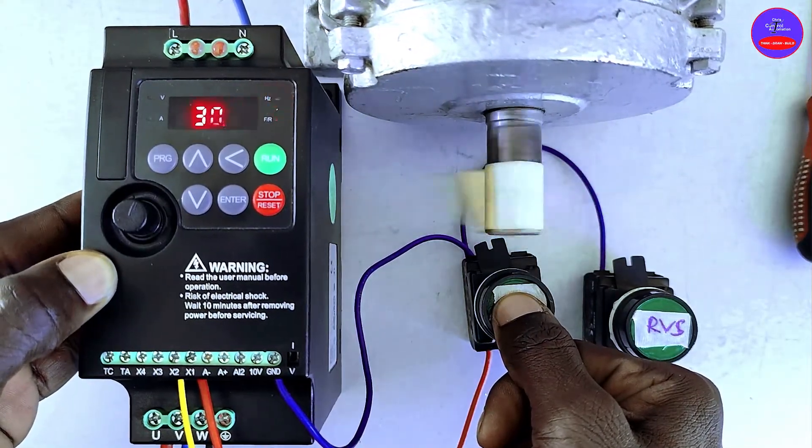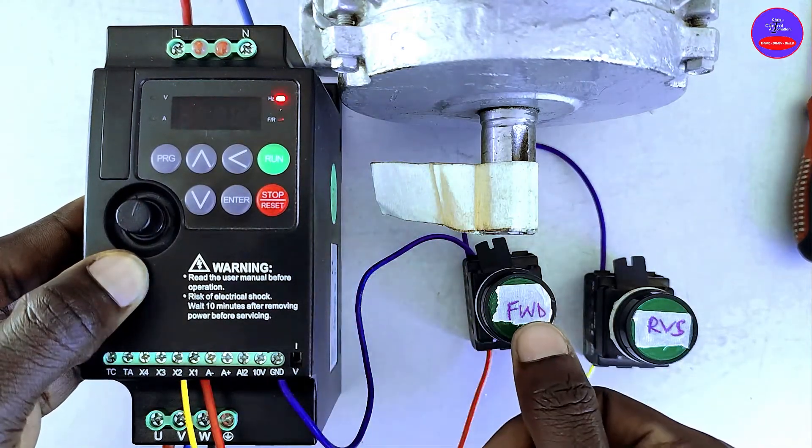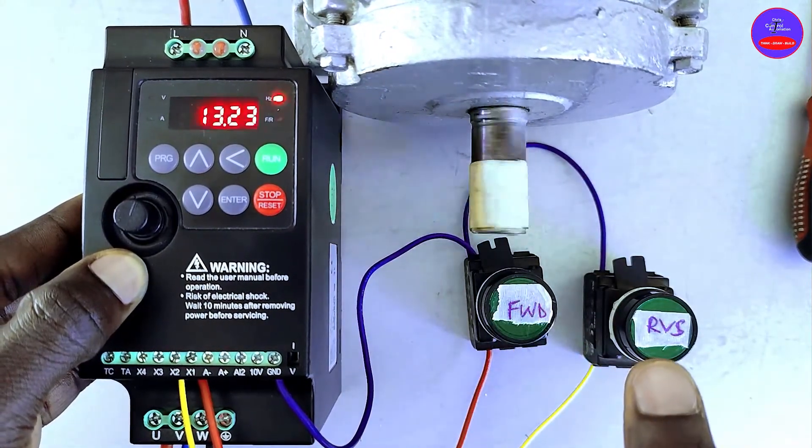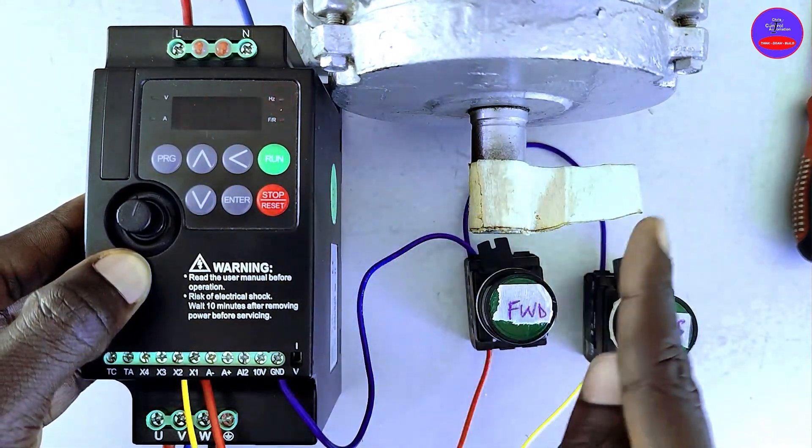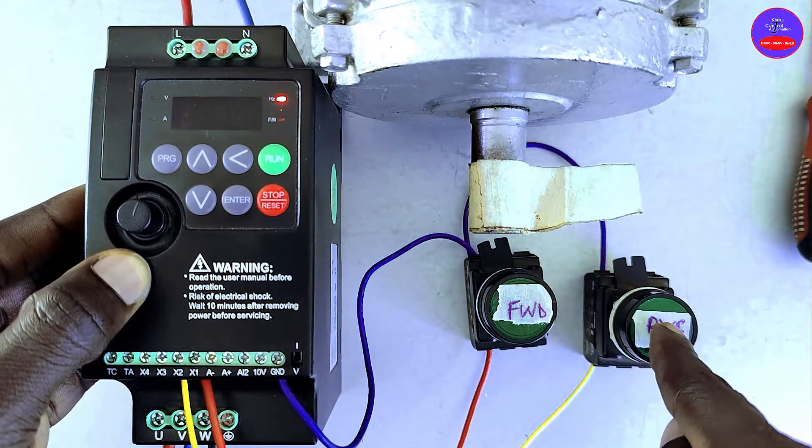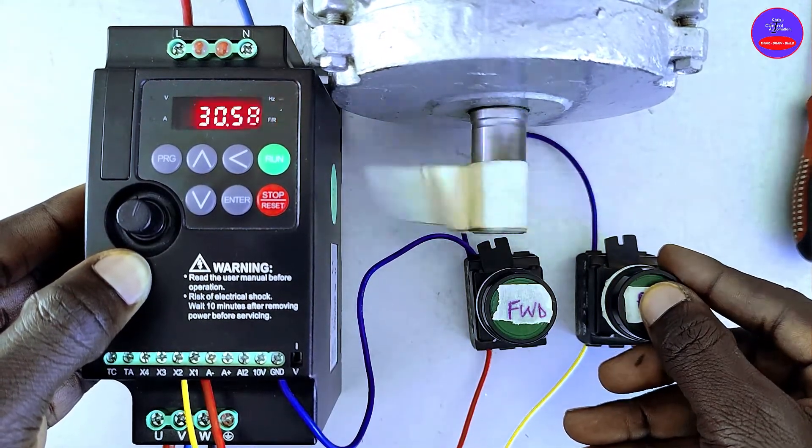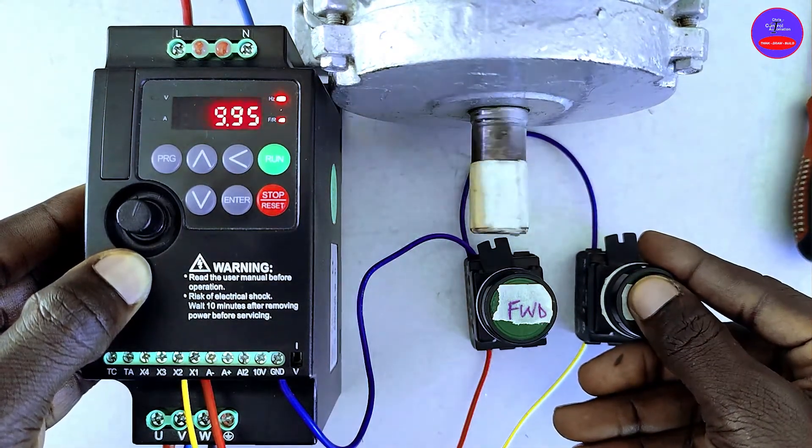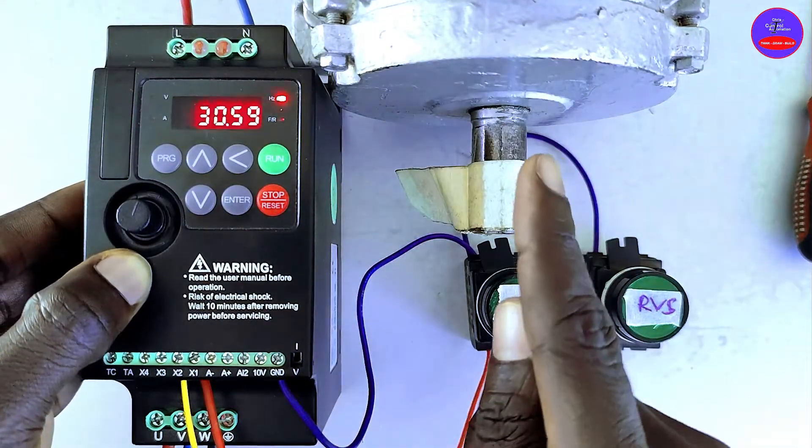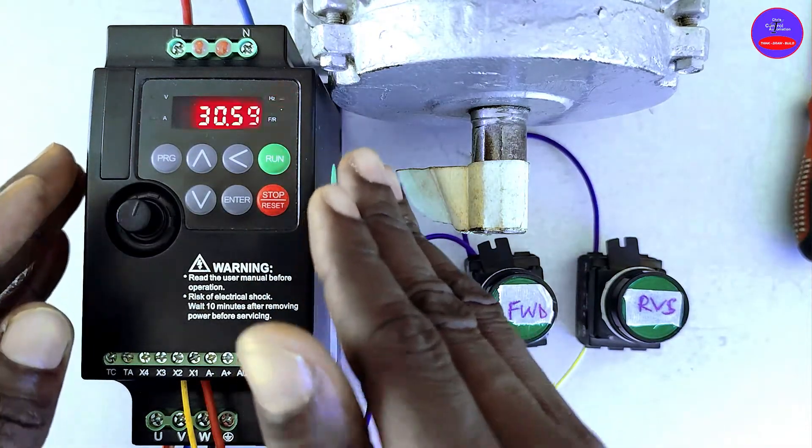When I take off my hand, it will go off. I am going again. You see direction is this way. I am pressing on the reverse button.